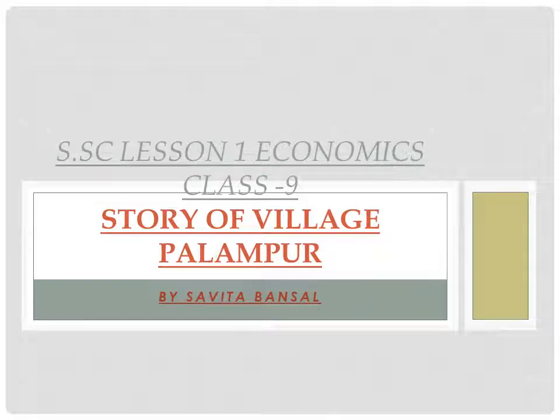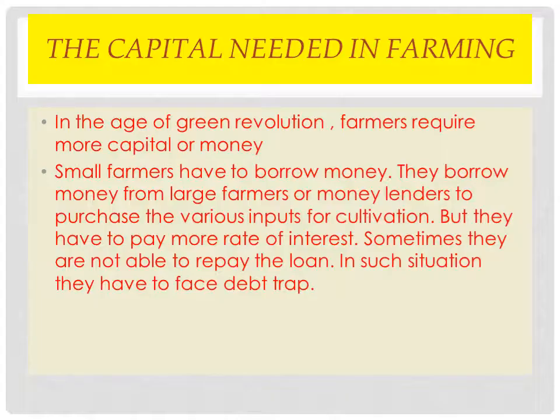We are describing the first lesson of economics: the story of village Palampur. Earlier we discussed that in Palampur, farmers use modern farming methods which require more money or capital, and when they use these modern farming methods, crop production has increased. Now we will discuss the topic of capital needed in farming in Palampur.